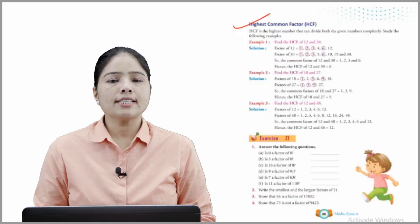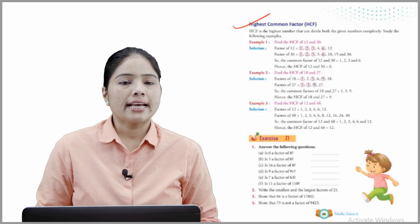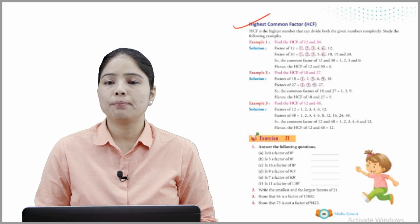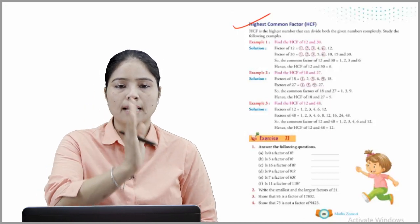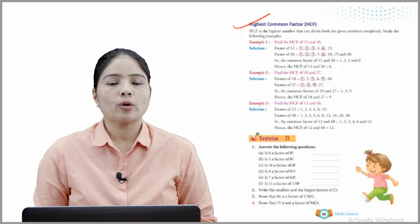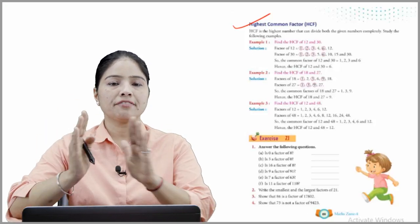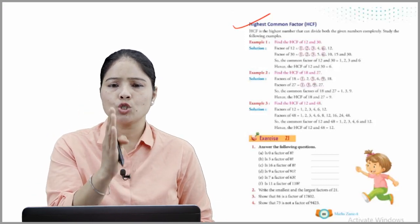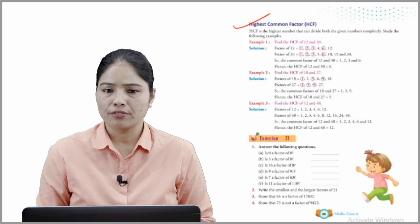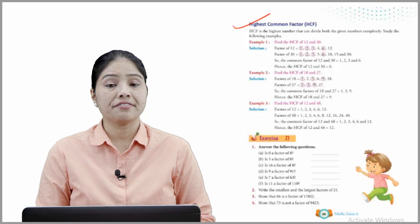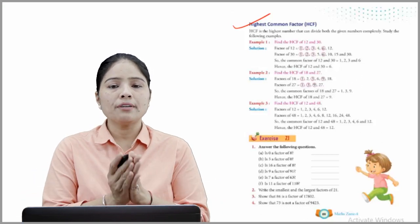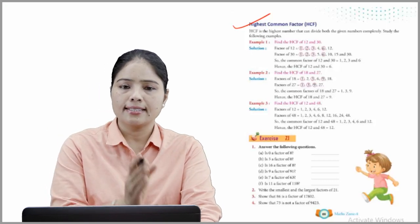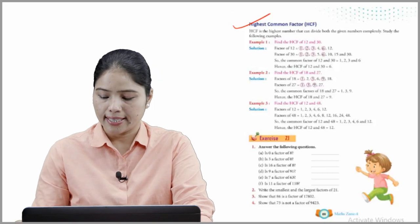Now, Highest Common Factor, which is called HCF. The HCF is the highest number that can divide the given numbers completely. Example 1: Find the HCF of 12 and 30. Factors of 12 are 1, 2, 3, 4, 6, and 12. Factors of 30 are 1, 2, 3, 5, 6, 10, 15, and 30. The common factors of 12 and 30 are 1, 2, 3, and 6. Hence, the HCF of 12 and 30 is 6.